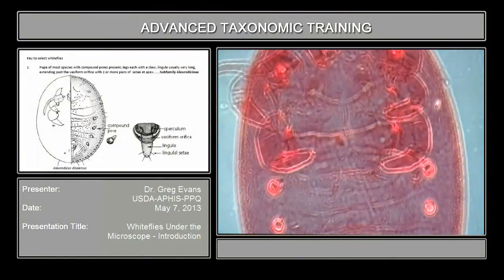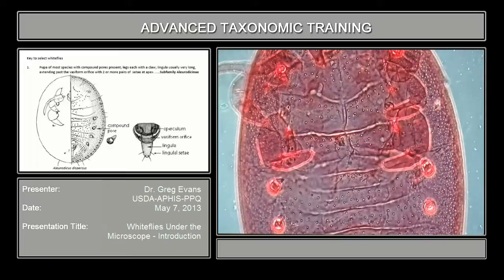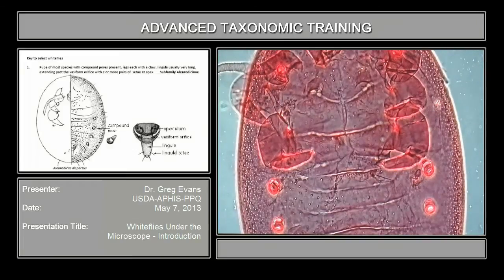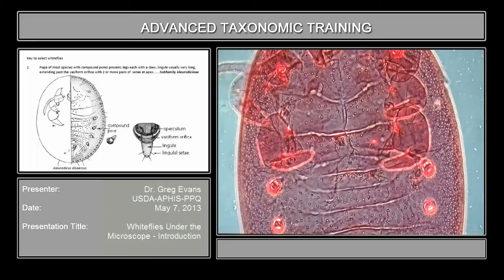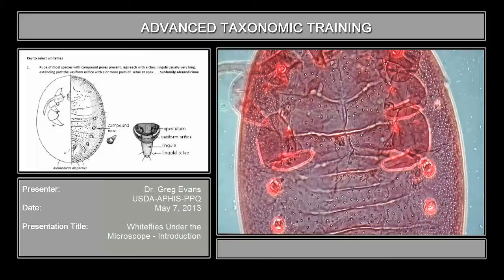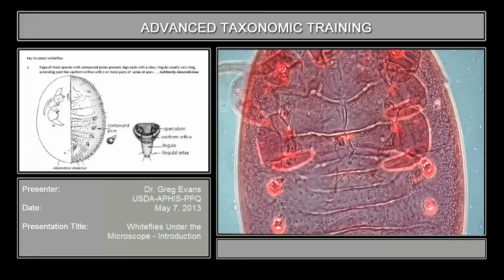This is the transverse suture that runs along here, and it's an important diagnostic character for some of the genera as far as how far to the margin this thing extends. This is the longitudinal suture that extends mostly to the anterior margin of the head. When the white fly is ready to come out as an adult, these open up and the adult white fly comes out.